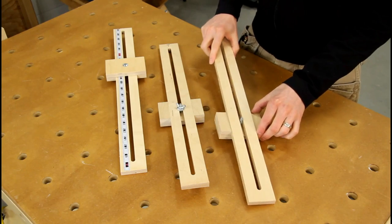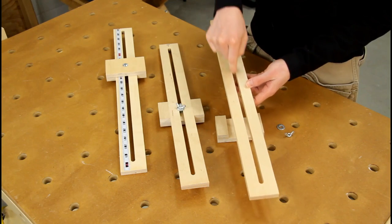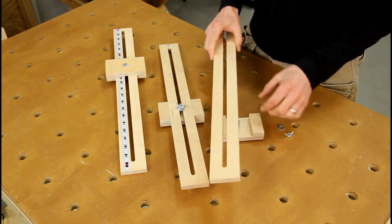So the main bar of the jigs is just a piece of half-inch Baltic birch, two and a quarter inches wide, with a three-eighth inch wide groove milled down the center.